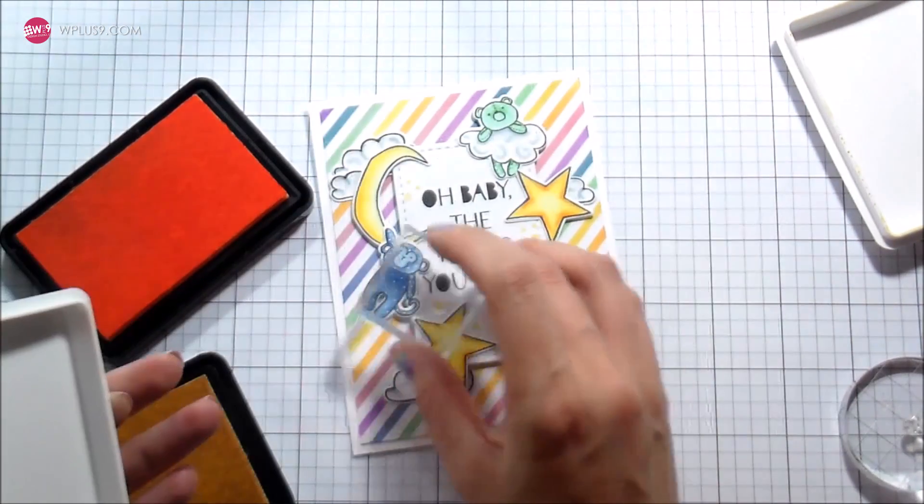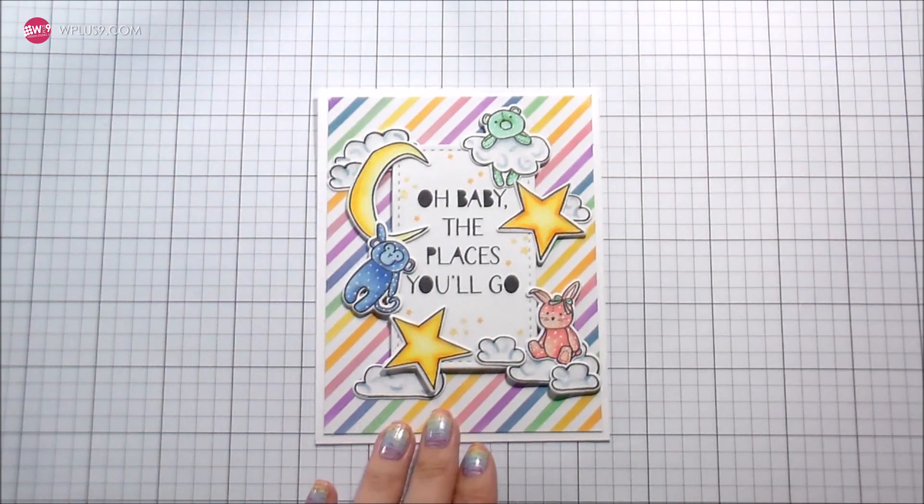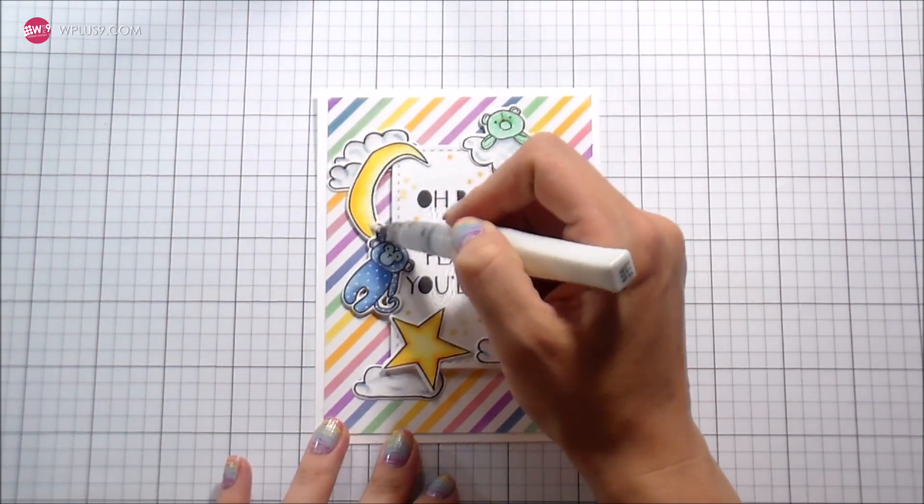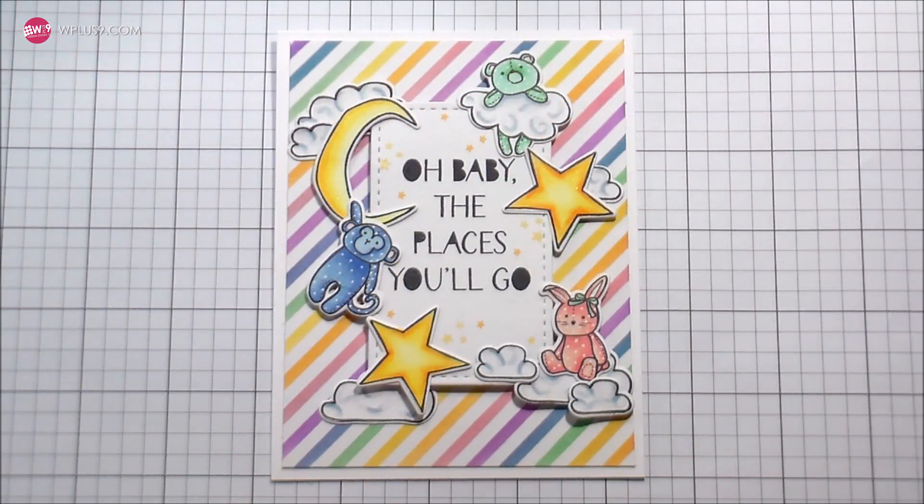The little dreamer set has these little stars in it, so I chose the solid stars and then I'm just stamping them to kind of fill in that space. Again nothing that's overpowering, just a little bit of an accent to fill in that area. I use my clear Wink of Stella to go over the moon and the two stars and then I also added it to the little stars that I had stamped, and then that's the whole card.